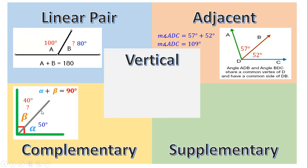Whenever you see a drawing and there's a line going through like this, don't ever assume that it's half and half, unless they tell you this angle equals that angle. So if they don't tell you anything and it looks like half and half, please do not assume it's half and half. As you can see, this angle is 15 and that's 40.